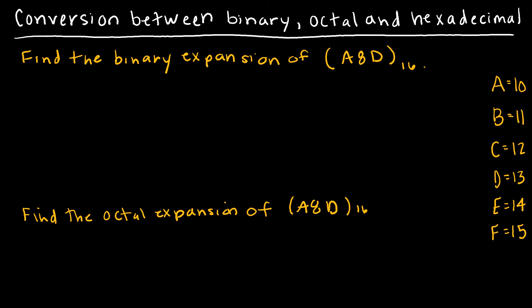Now let's take a look at going from hexadecimal to binary and octal. Going from base 16, which is 2 to the 4th, down to binary (2 to the 1st): each hexadecimal value gives us 4 binary values. Our hex number has digits 8, A, 8, D, each giving 4 binary digits.